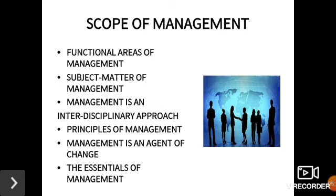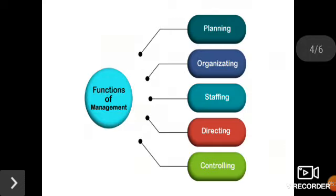Next we look at the five functions of management: planning, organizing, staffing, directing, and controlling. The first function is planning. Planning is simply looking ahead — it is the process of preparing a list of activities for the future. Effective planning leads to efficient management and provides answers to questions such as what to do, when to do, how to do, and who is going to do it.